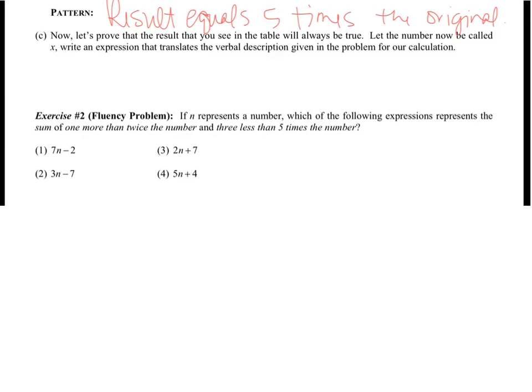So we're going to take the information we just did and prove that you see it will always be true. So instead of putting in a number we're going to use the letter x. So it's the sum of 3 times a number plus 2 and 2 times that number minus 2. So now we need to do the distributive property. We need to combine like terms to find out what our answer will be. So I have 3x and 2x makes 5x. And then I have positive 2 and negative 2 which becomes 0. So our answer is just 5x. So 5 times the original.